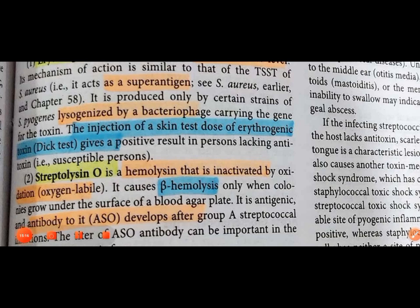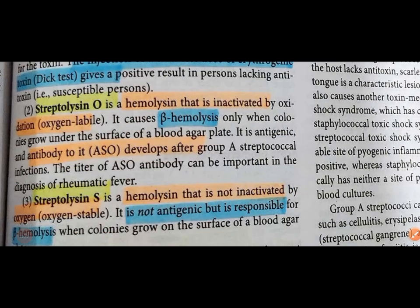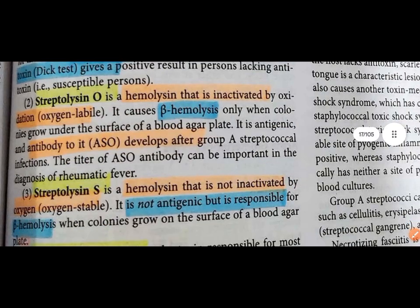Streptolysin O is a hemolysin that is inactivated by oxidation. It causes beta hemolysis on blood agar. It is antigenic, and the antibody against it is called Anti-Streptolysin O (ASO), which is used diagnostically.